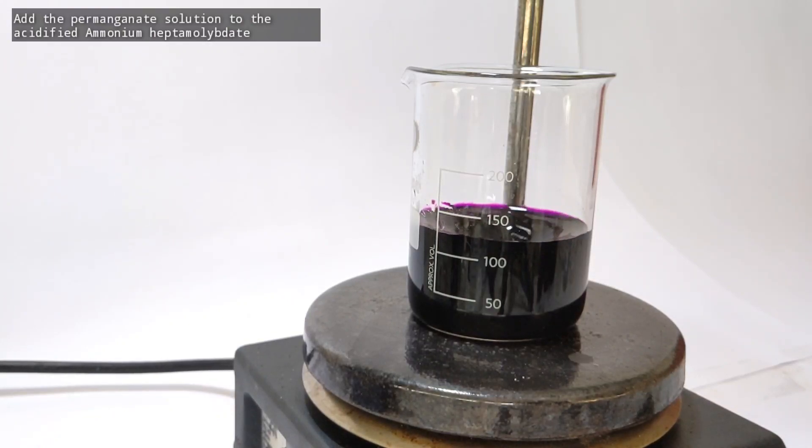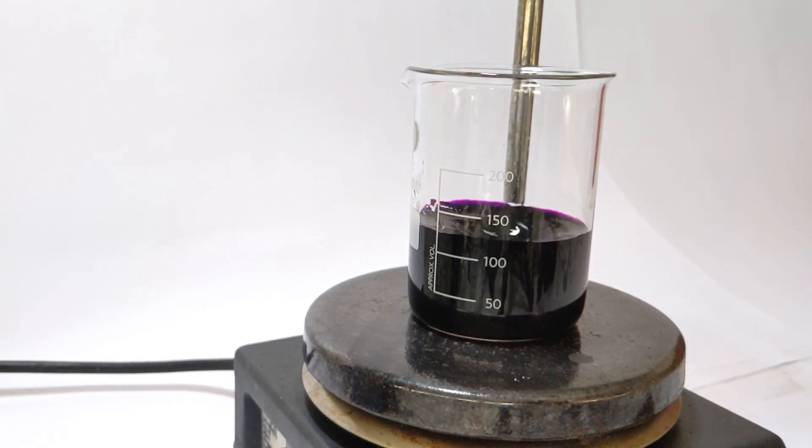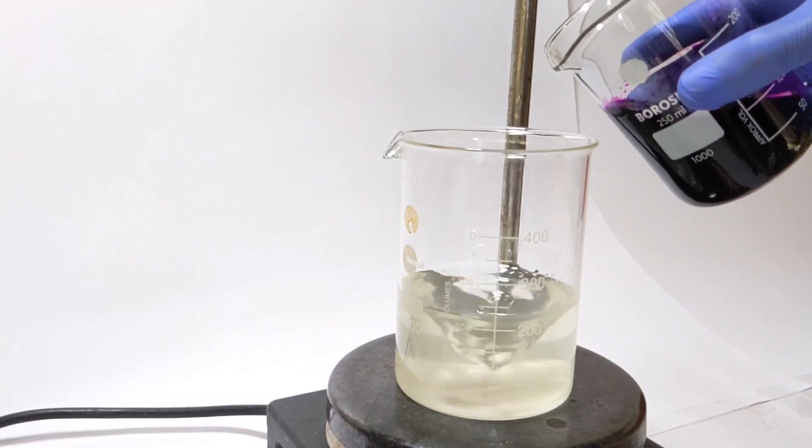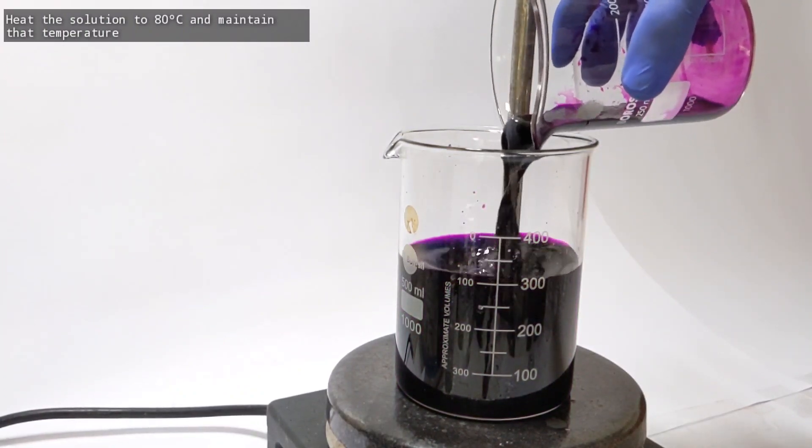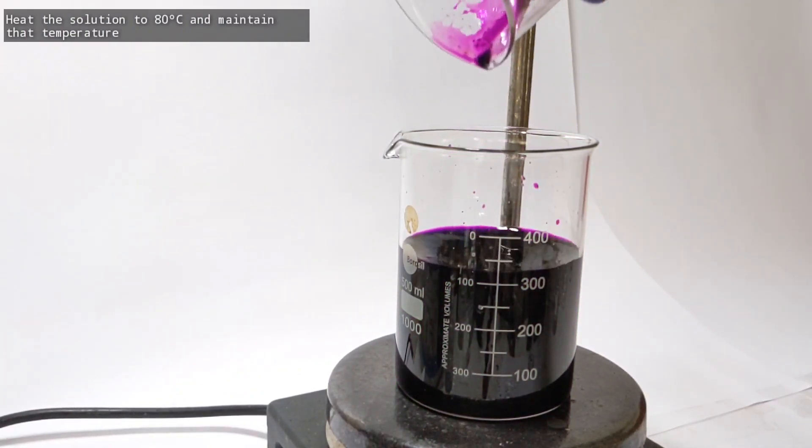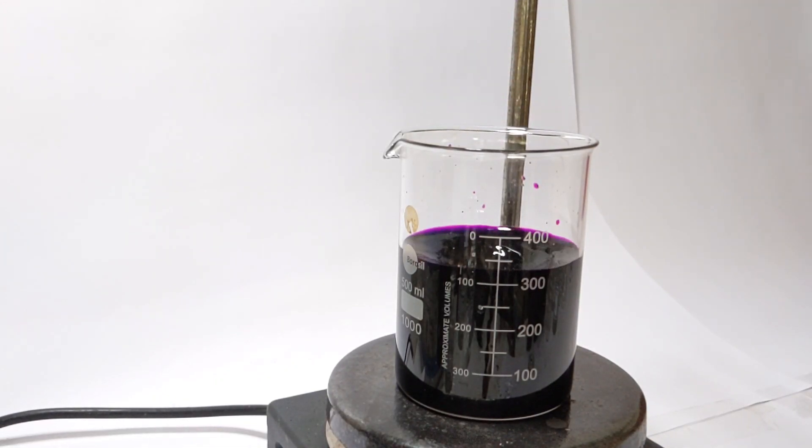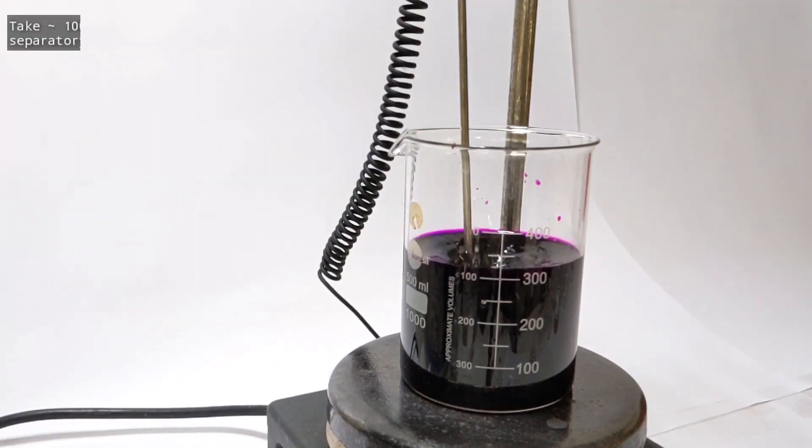Now add the potassium permanganate solution to the pH adjusted solution of ammonium heptamolybdate. You can add everything at once. Now the temperature was raised to 80 degrees Celsius and maintained at that temperature.